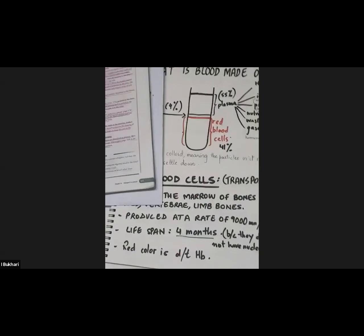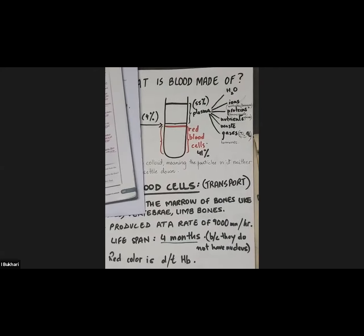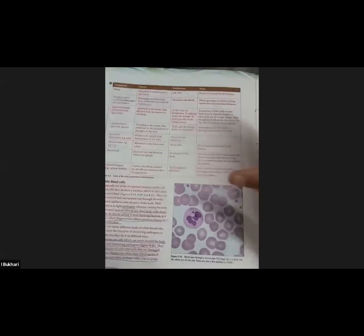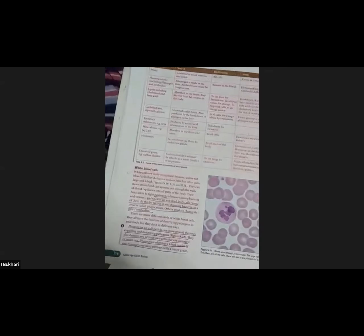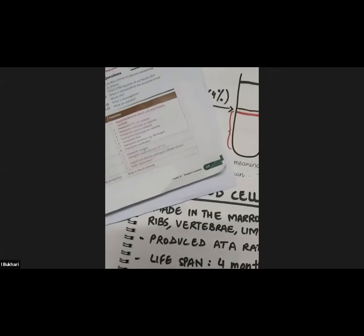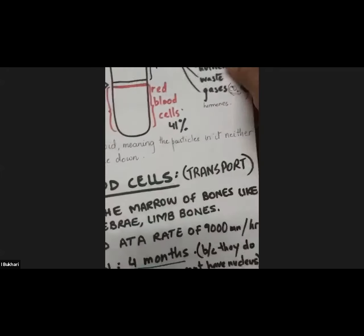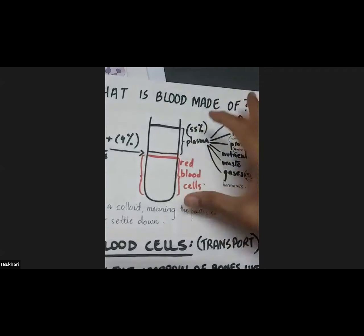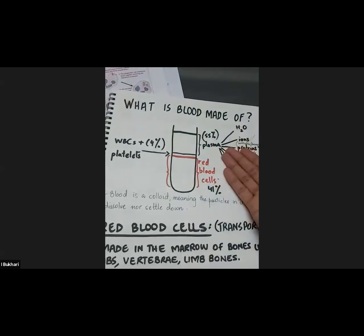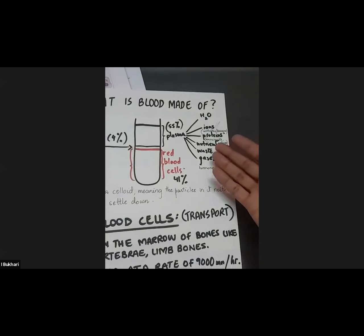This transport of substances in blood, I briefly discussed already with you while I was discussing the table on page 118. This table is a summary of what we are going to discuss right now, so all the points are in a condensed form within table 9.2 on page 118. Just a little recap of what blood is made up of: we discussed almost 41 to 44% is red blood cells and then 55% is plasma. Plasma mostly is water with all these substances dissolving in water.